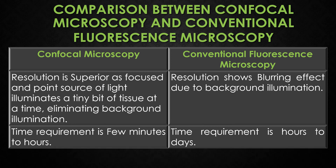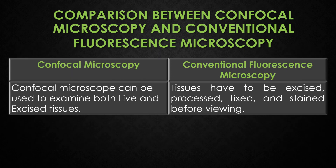The resolution is superior in confocal microscopy, as a focused point source of light illuminates a tiny area of tissue at a time, eliminating background illumination. Conventional fluorescence microscopy shows a blurring effect due to background illumination. The time requirement for confocal microscopy is a few minutes to hours, while conventional fluorescence microscopy requires half a day to days. Finally, confocal microscopes can examine both live and excised tissues, whereas in conventional fluorescence microscopy tissues must be excised, processed, fixed, and stained before viewing.